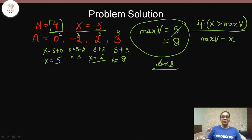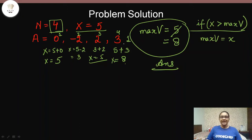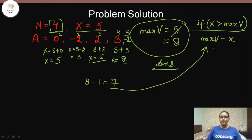In this example the update happened at the last minute, but that won't always be the case. If we add a fifth minute with value minus 1, then x becomes 8 minus 1 equals 7. Since 7 is not greater than max_v of 8, no update happens and the answer remains 8.